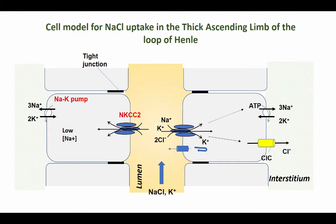The thick ascending limb is highly permeable to sodium and chloride. Some potassium will also be taken up into the interstitium, but most of the potassium is going to be recycled at the apical membrane.